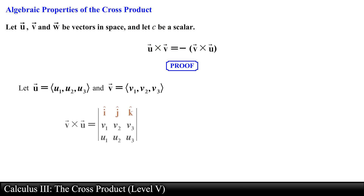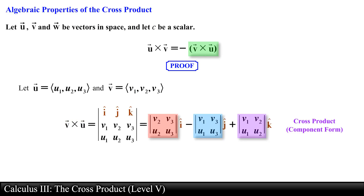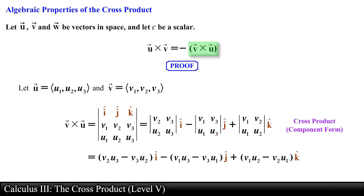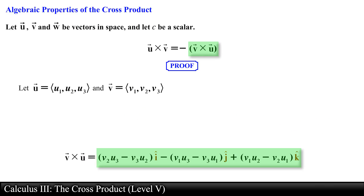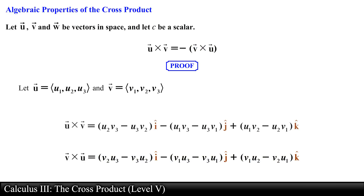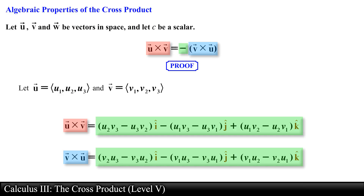Next we do the same and use the component definition of the cross product to find vector v crossed with vector u, obtaining the following expression for its components. Taking a look at the two vectors, we see that the expression on the right can be obtained by multiplying the expression on the left by the scalar negative 1. And this ends the proof.